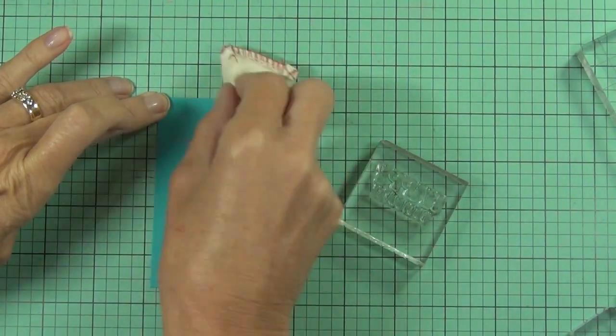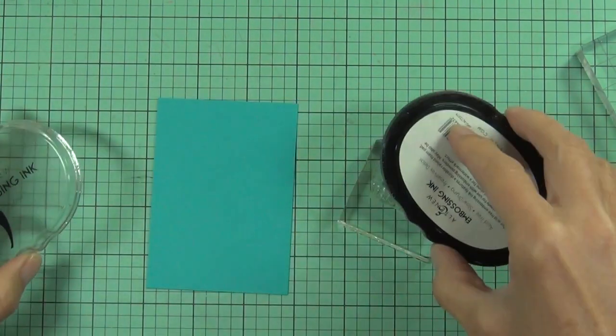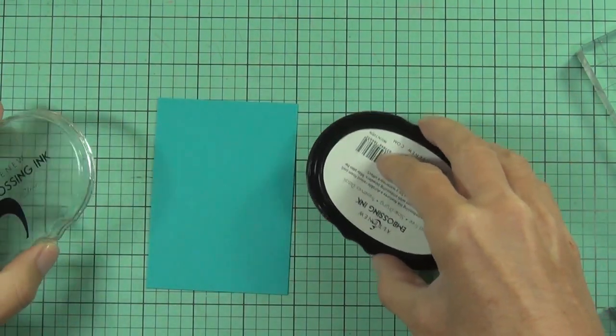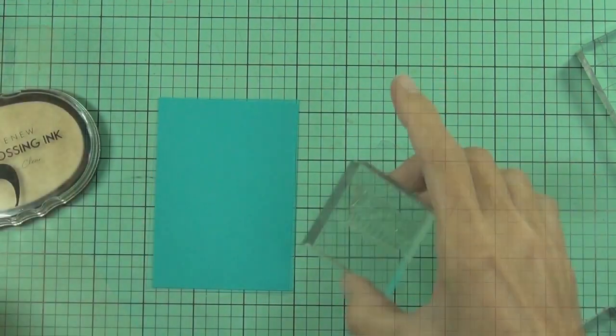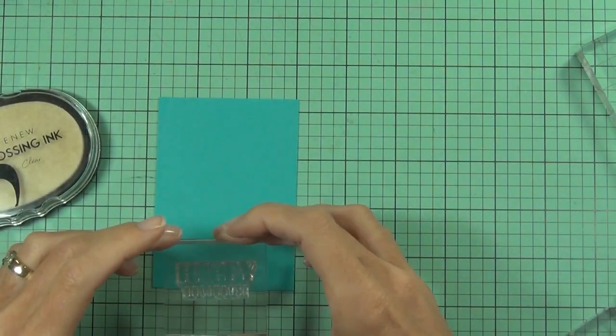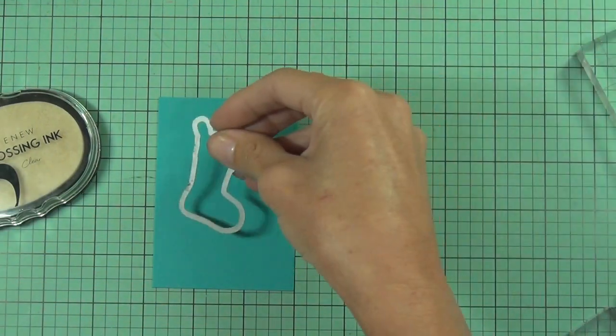This is some Lagoon cardstock and I'm prepping it with a powder bag and embossing a sentiment and this is from the festive poinsettia set.